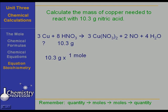We start with our 10.3 grams of nitric acid and we convert that to moles. One mole of nitric acid, when we add up all of those atomic weights, is about 63 grams.